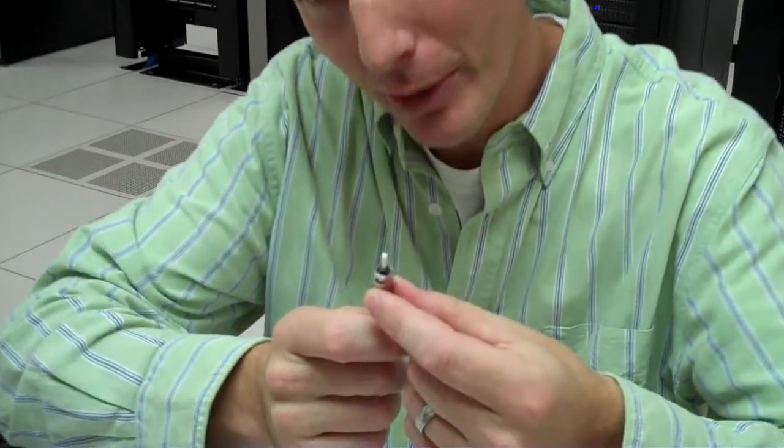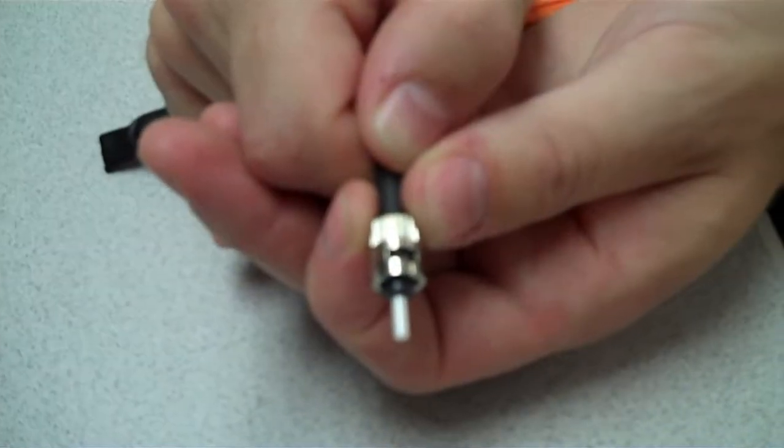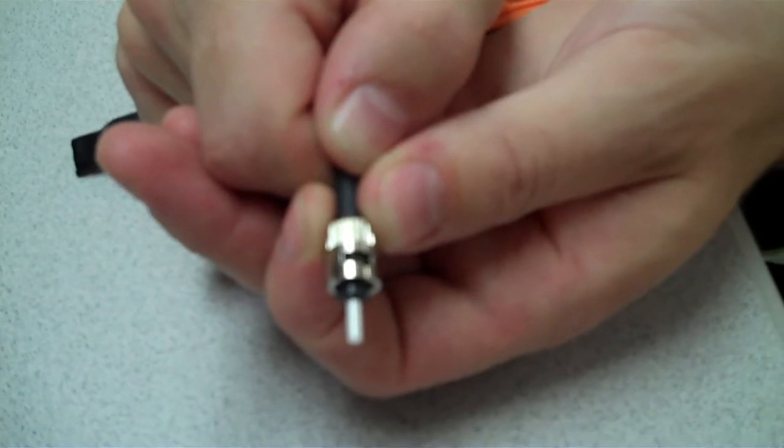This is the ST connector, which also has a 2.5 millimeter ferrule. The ST stands for straight tip. It was developed by AT&T shortly after the advent of the FC. The design is very similar to the FC, but the quick locking mechanism greatly speeds up installation.